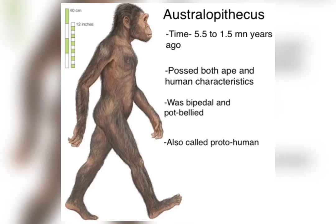Now let's have a look at the second stage, that is Australopithecus. The time period during this stage was about 5.5 to 1.5 million years ago. They had both ape and human characteristics, that is they resembled features of both apes and humans. Because of this they were also known as proto-humans.